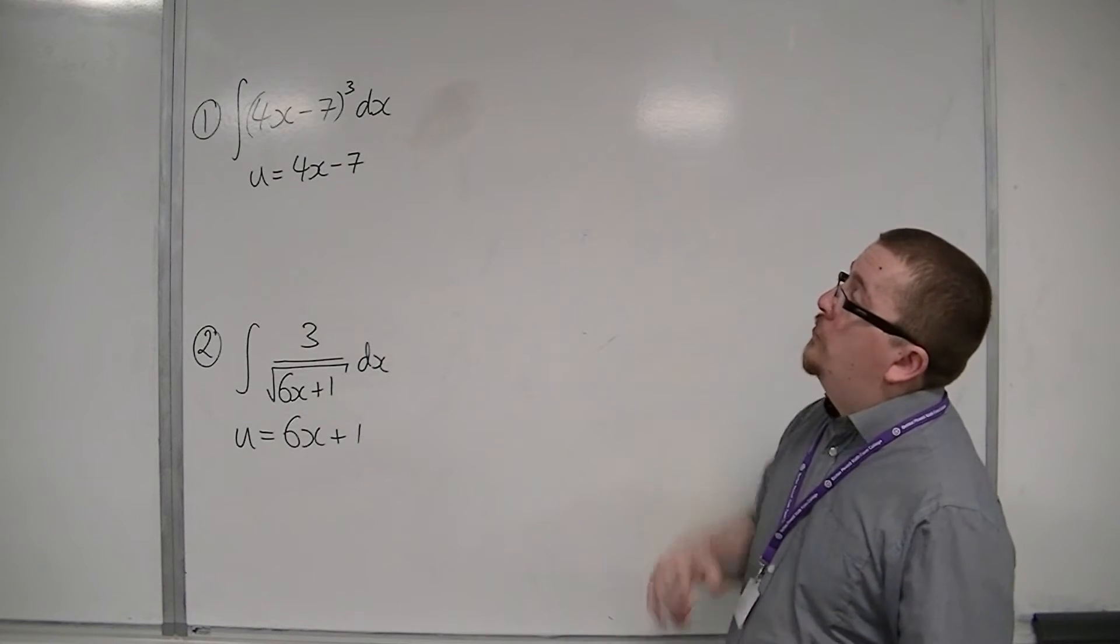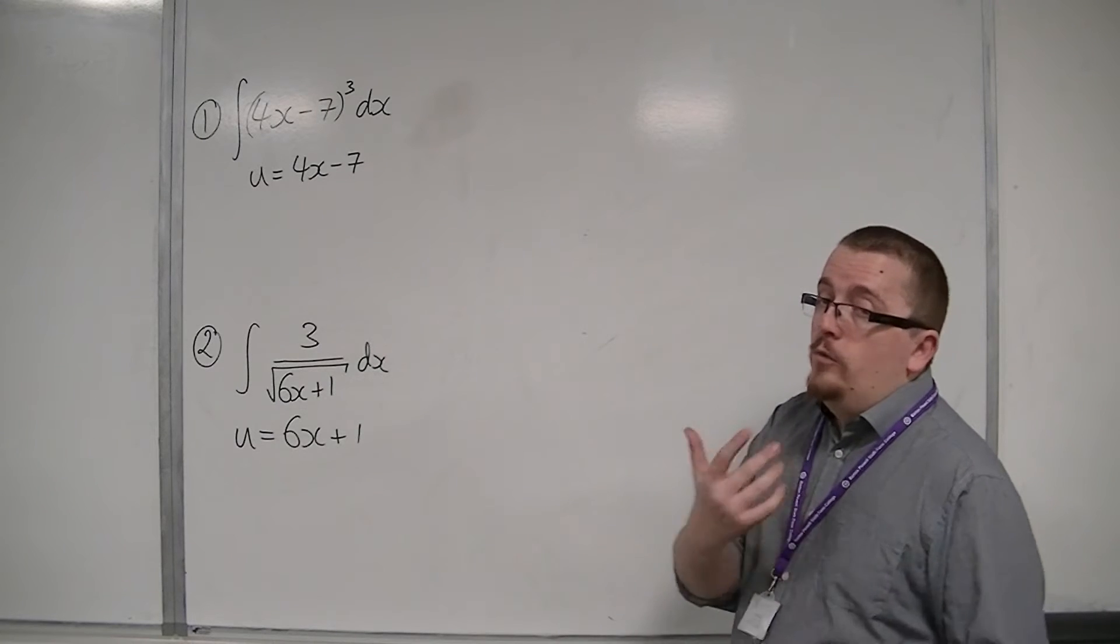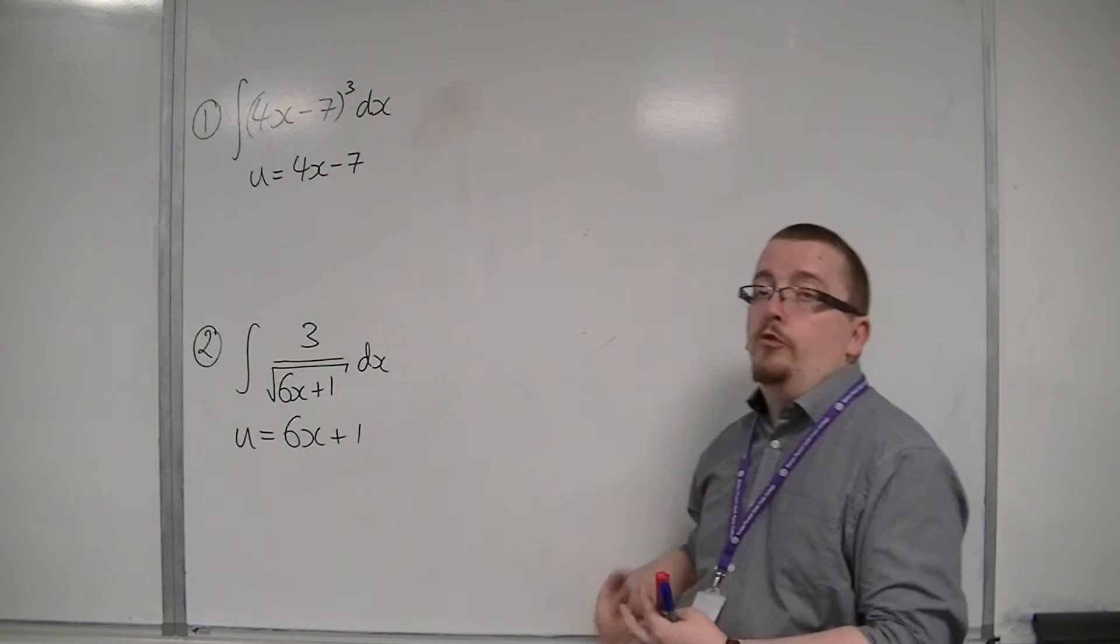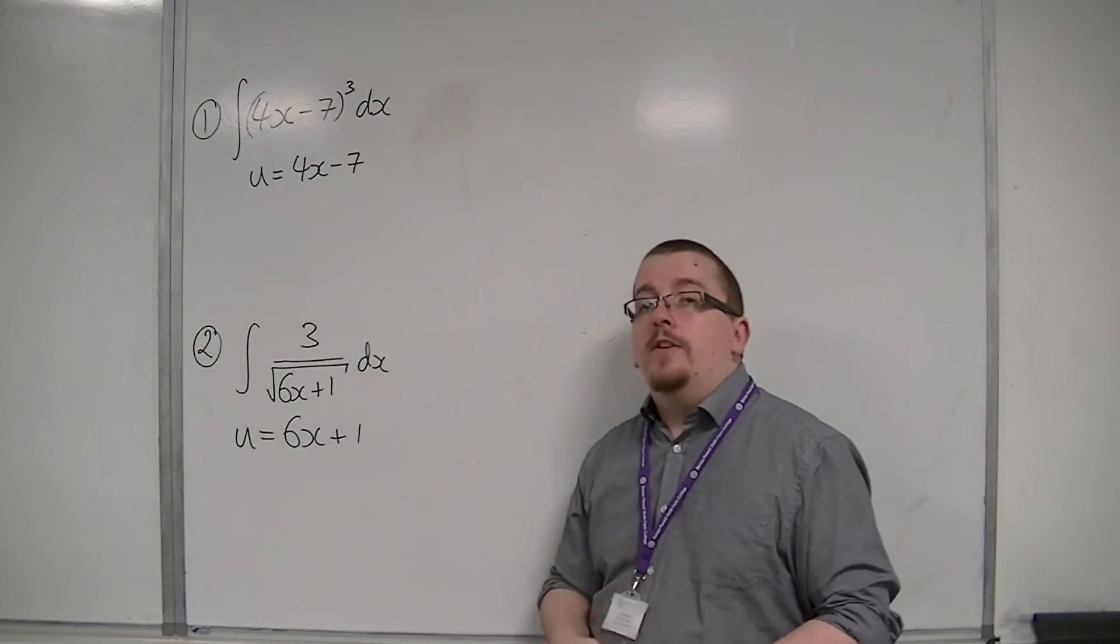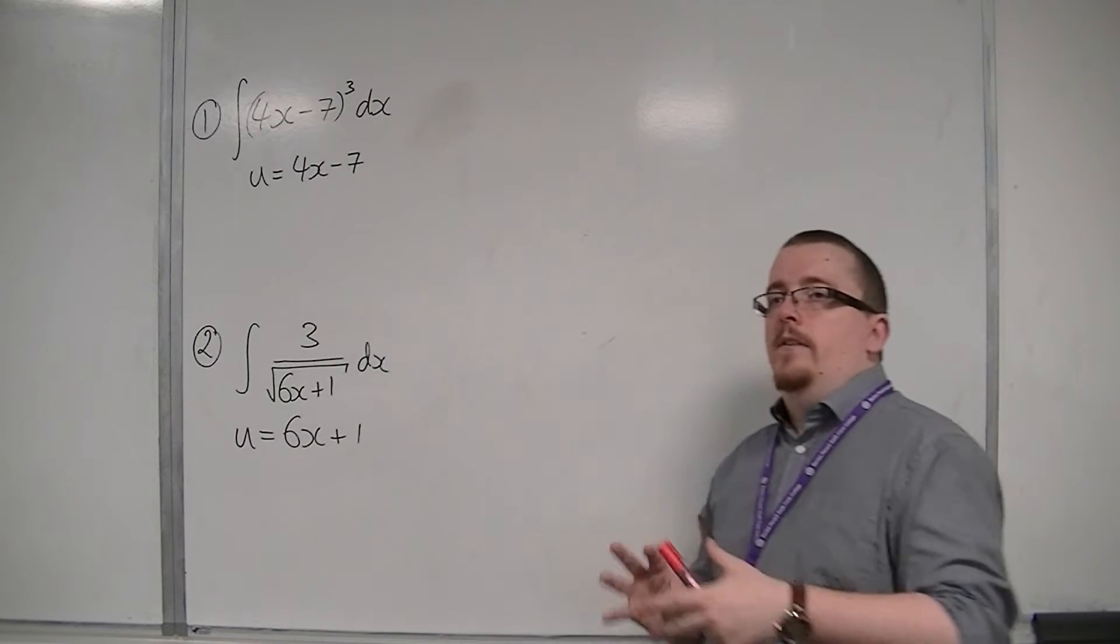So we're going to start off with the integral of 4x minus 7 cubed dx. And by the way, both of these you should be able to use reversing the chain rule to integrate, so you can check that as well.